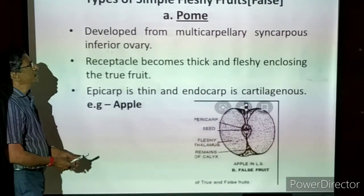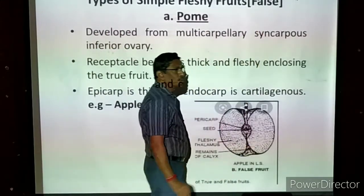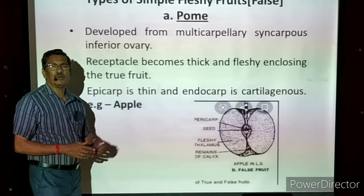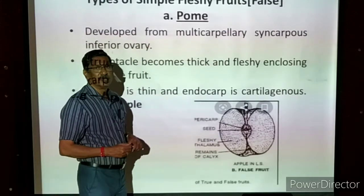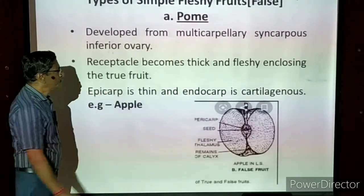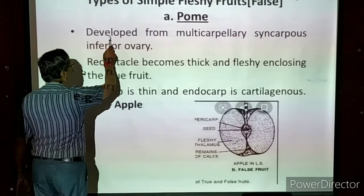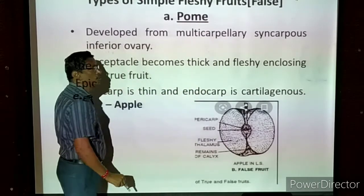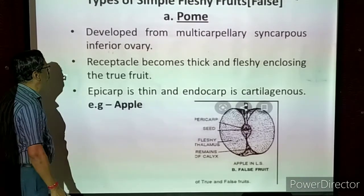Now in the same group of simple fleshy fruits we have false fruits. In a false fruit, the ovary wall does not develop into the edible part — instead, a structure other than the ovary wall develops into the edible part. The example we are going to take is apple. The pome is developed from a multicarpellary syncarpous inferior ovary — the carpels are fused and the ovary is at the bottom with all other parts present above it.